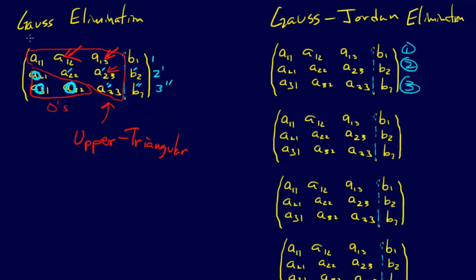Alright, so we already showed you Gauss Elimination and I brought back one of the little figures from Gauss Elimination. Because in Gauss Elimination what we do is we zero out these entries below the diagonal.